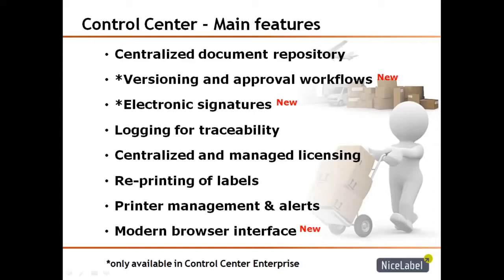We have logging of what's going on. Every single print job is logged, so we can keep track of what was printed at what time, by what user, and even how many labels are printed with the actual data that went on to those label templates, so you can go back and even reprint if you wish. We have centralized managed licensing in this Control Center, so you can keep control of all of your networked users, how many licenses are available, and also all of your automation servers. We also have printer management and alerts, allowing you to see all of your printers connected to the network, check their statuses, and if an error happens, you can enable alerts to notify users via email, instant message, or RSS feed.